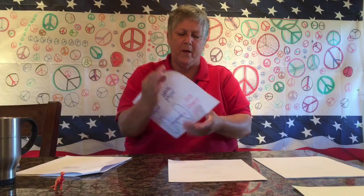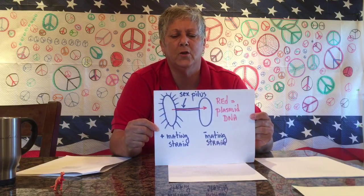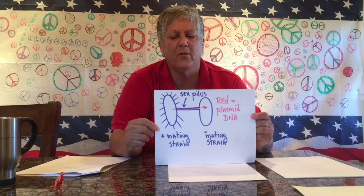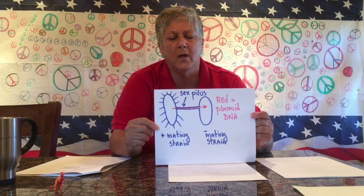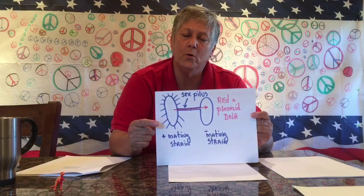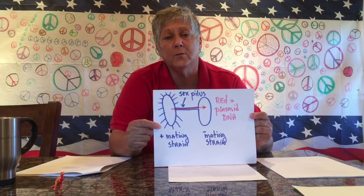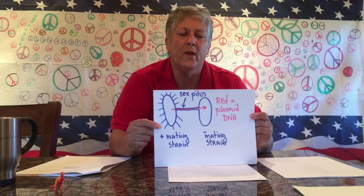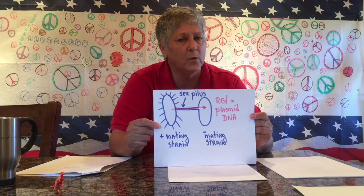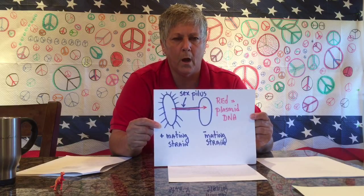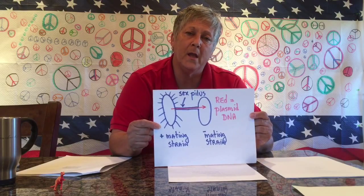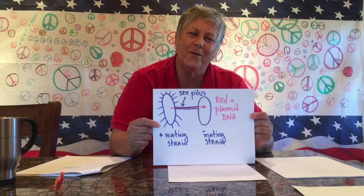Plasmids can be gained or lost through conjugation. During bacterial conjugation, it is typically plasmid DNA that's donated from one cell to another. The donor cell makes a copy of its plasmid DNA, and the copy gets transported through the hollow sex pilus into the cytoplasm of the recipient cell. Sometimes things go awry and the donor cell ships its only copy of the plasmid to the recipient, thereby losing it.